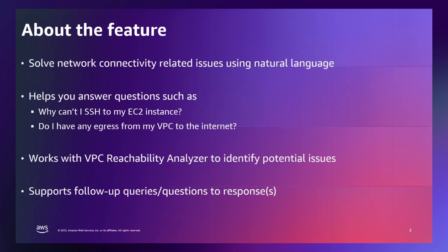The issue could be as simple as a small mistake in the route table configuration or a small mistake in the security group configuration. Amazon Q will help you detect that issue and pinpoint that specific security group, for example, where the issue might be. And once you identify that issue, you can go make those changes, come back to Amazon Q, and then again validate to see that your changes are actually working.